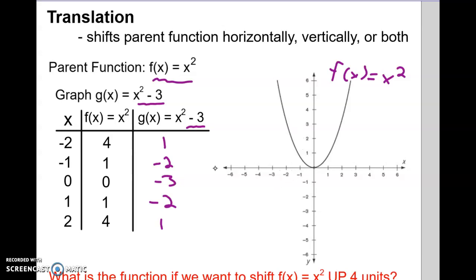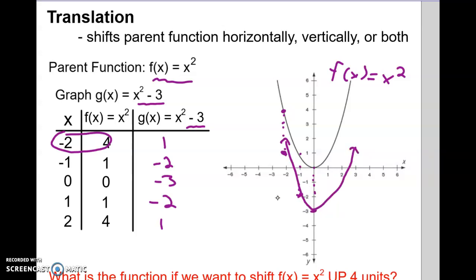Visually, the point that was at negative 2, 4 has dropped down to 1. When x was negative 1, we were at positive 1, but now it's been dropped down to negative 2. The graph just slid down 3 points — all the points have been slid down by 3. We have the same U shape, just slid down by 3. So this minus 3 on the end of the function just moved it down 3.